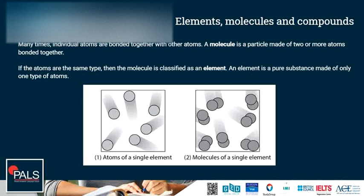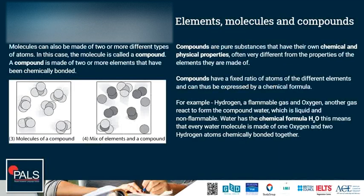An element is a pure substance made of only one type of atom. A molecule is a particle made of two or more atoms chemically bonded together. Molecules can also be made of two or more different types of atoms. In this case, the molecule is called a compound. A compound is made of two or more elements that have been chemically bonded together.